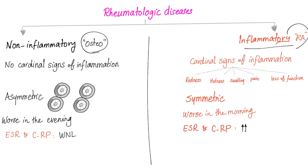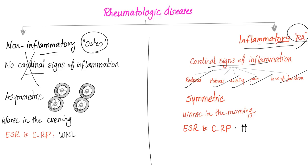What's the difference between non-inflammatory arthritis, such as osteoarthritis, and inflammatory arthritis, such as rheumatoid arthritis? Osteoarthritis is mechanical and non-inflammatory — you do not have cardinal signs of inflammation. With inflammatory arthritis, you will have the cardinal signs: redness, hotness, swelling, pain, loss of function — ruber, calor, tumor, dolor, functio laesa.